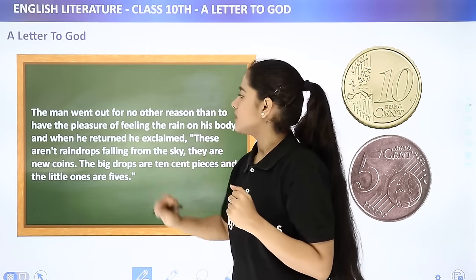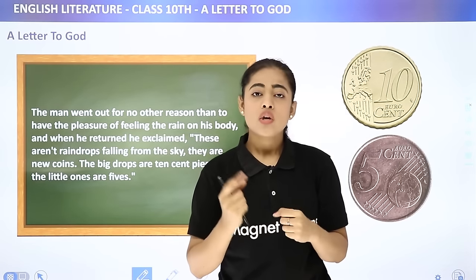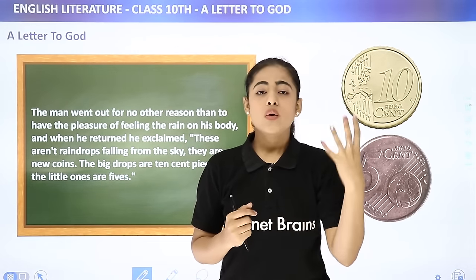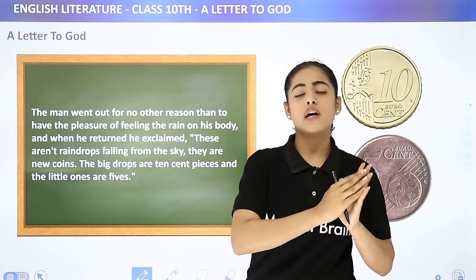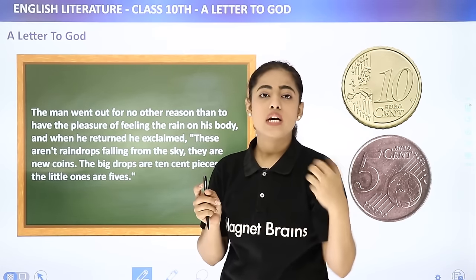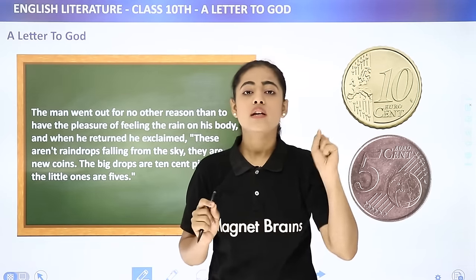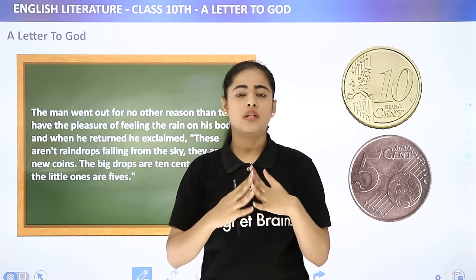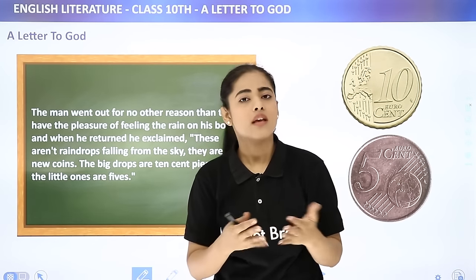The man went out for no other reason than to have the pleasure of feeling the rain on his body. When he returned, he exclaimed: 'These are not rain drops falling from the sky — they are new coins!' This is a very beautiful depiction. Lencho compared the rain drops to coins because if rain doesn't come, the crops are destroyed and there is total loss. But with rain, there will be a good harvest and Lencho will earn money — so rain drops ultimately bring him money, hence he calls them new coins.